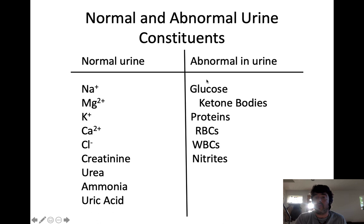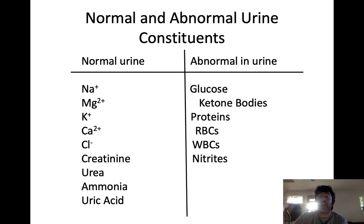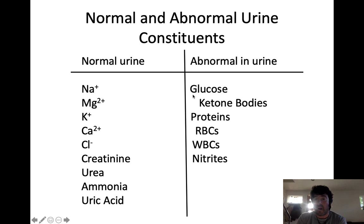Things you should not find in urine — abnormal constituents — include glucose. Even though glucose gets filtered, in a healthy kidney you should reabsorb every last speck of it. If you find glucose in the urine, it means there are abnormally high glucose concentrations in the blood. If the concentration is so high that it's spilling over into the urine because we can't reabsorb all that's being filtered, that could be indicative of a metabolic condition like diabetes mellitus.